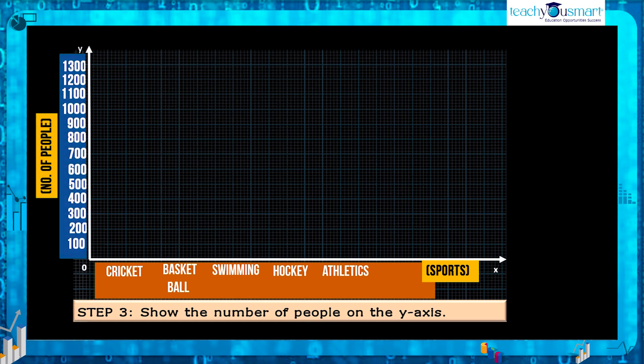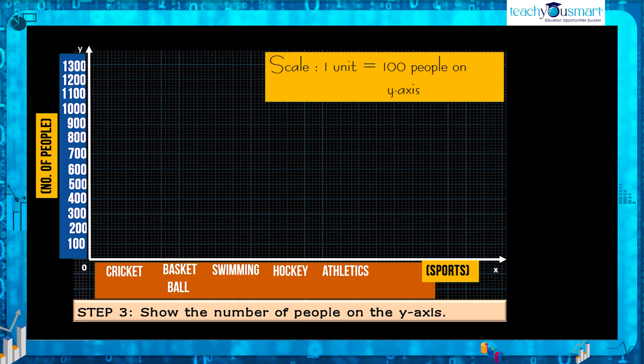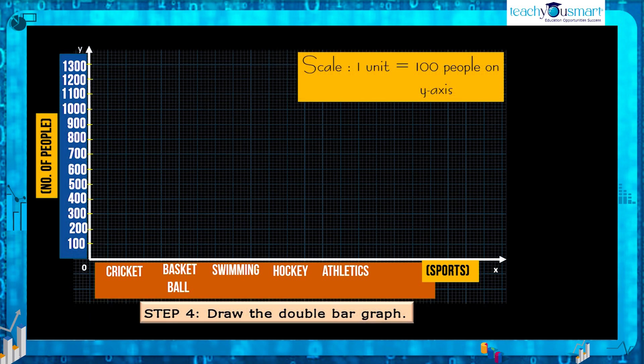For that choose a convenient scale to represent. Here we can take the scale as one unit equals 100 people. Draw the double bar graph.